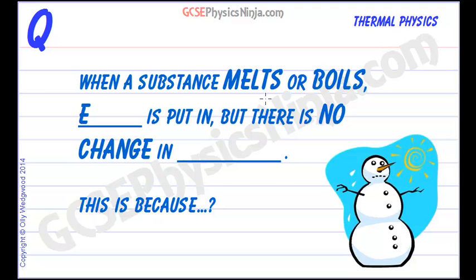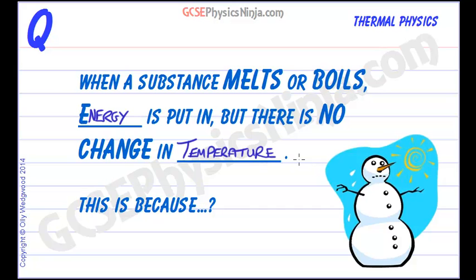When a substance melts or boils, you can put energy in, but there is no change in the substance's temperature. That's a bit strange — if you put thermal energy into water, its temperature increases because its particles move around faster. Temperature is a measure of how fast the particles are moving or vibrating. So why is it that you put energy in at the melting or boiling point but there is no change in temperature?